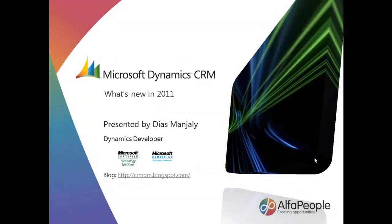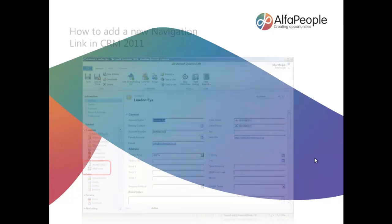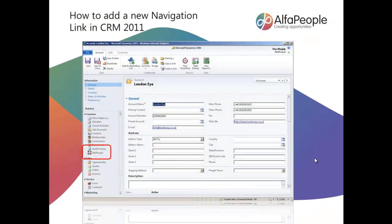He will be exploring how to add a new navigation link in CRM 2011. On the left hand navigation pane that you see there, there will be a direct link that he will establish between this account record and an external website. So, over to you Diaz.